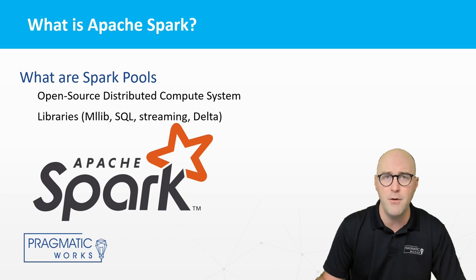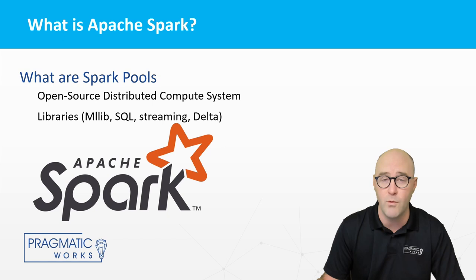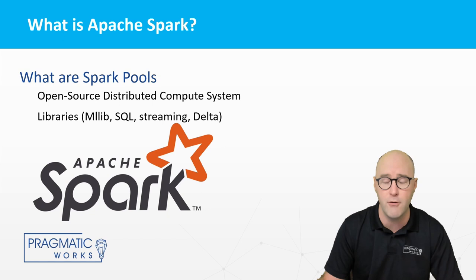Delta is utilized specifically by running on top of something known as Apache Spark. Apache Spark is an open-source distributed computing system designed for processing large-scale data — remember, data lakes are meant for big data and Apache Spark is a great way to provision that. It is built on top of the Hadoop Distributed File System (HDFS) and can access data from a wide range of sources.